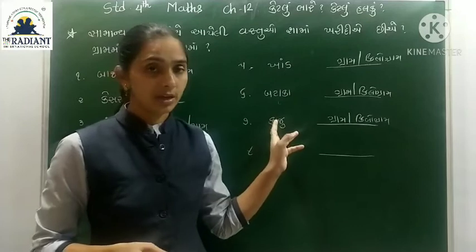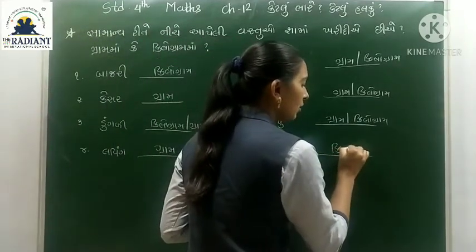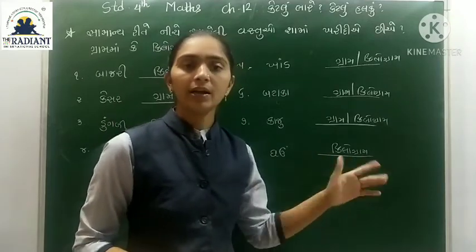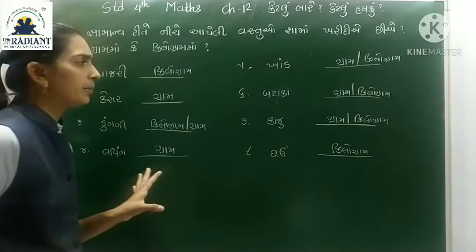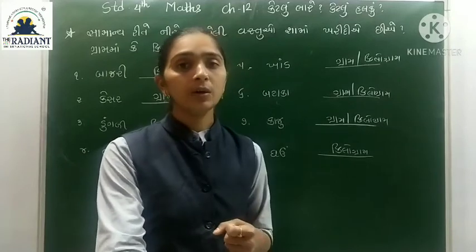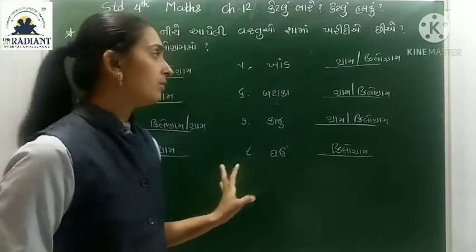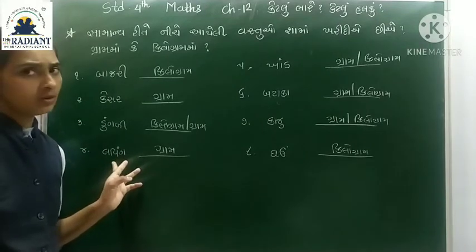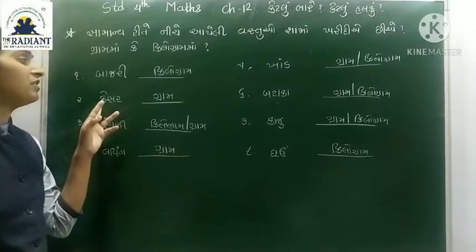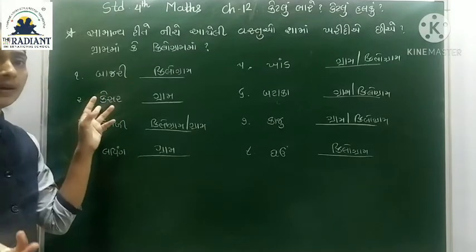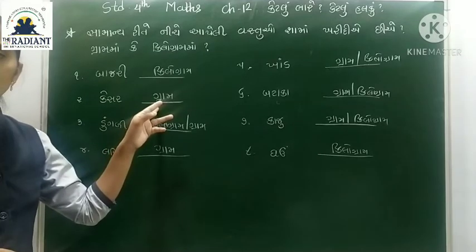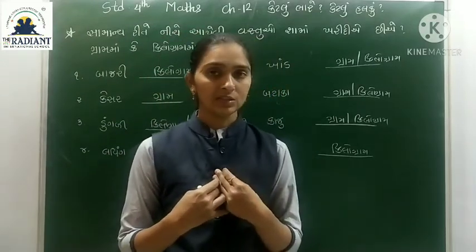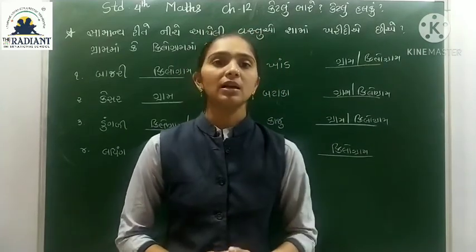કાજુ - ગ્રામ અને કિલો ગ્રામ, બંને માં ખરીદી કરી શકીએ. ઘઉં - ગ્રામ અને કિલો ગ્રામ બંને. આ આપણી ખરીદી ઉપર આધાર રાખે છે - 10 ગ્રામ, 20 ગ્રામ, કે જે જોઈએ. વિડ્યાર્થી મિત્રો, આજે બસ આટલું જ. નવા વીડિયો સાથે ફરી મળીશું.